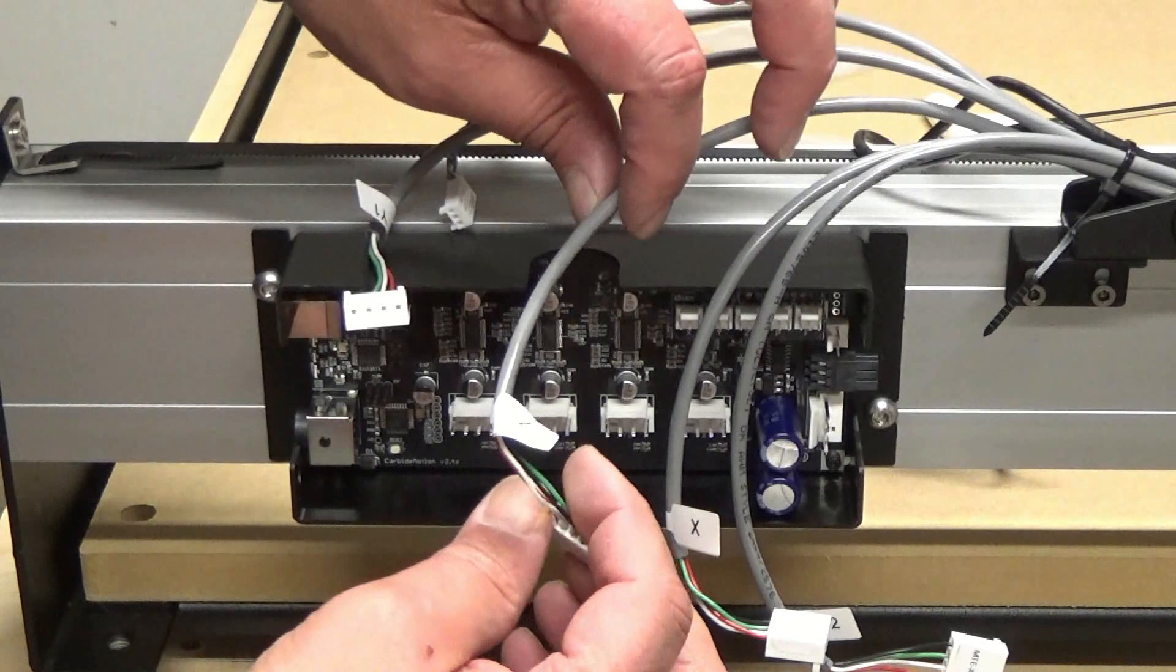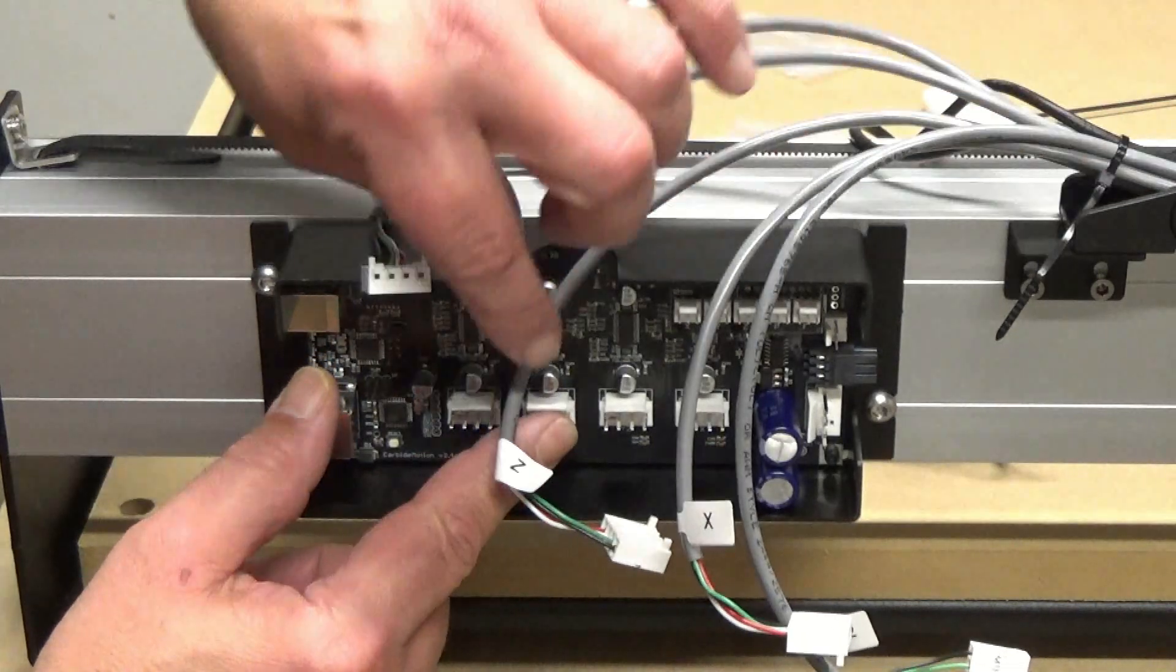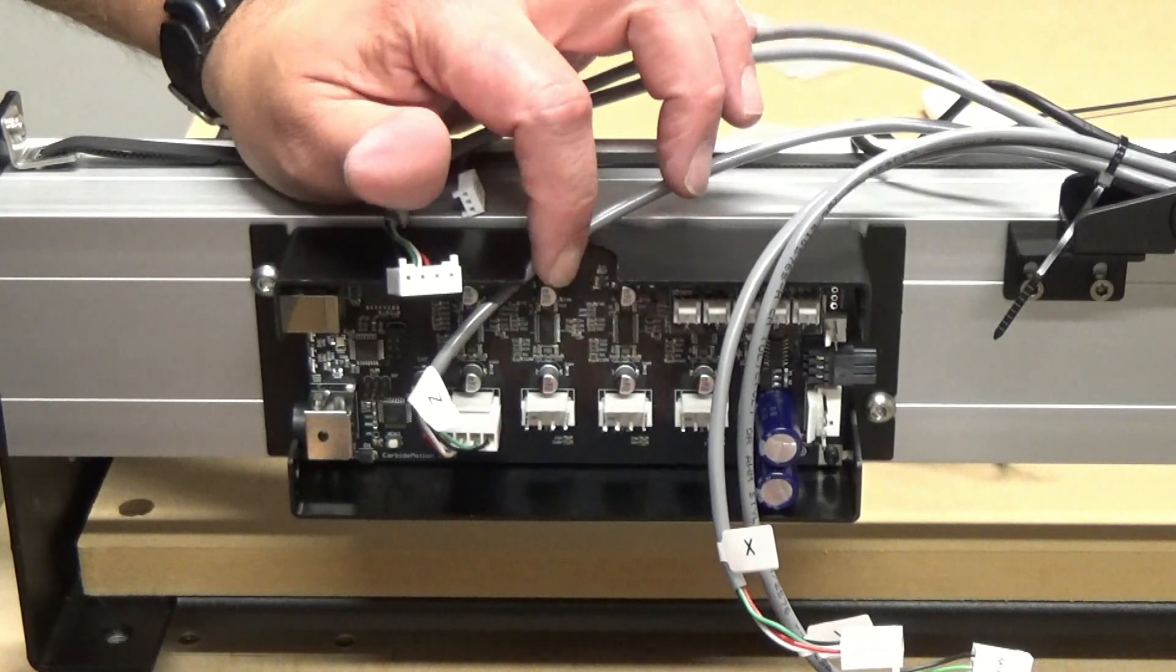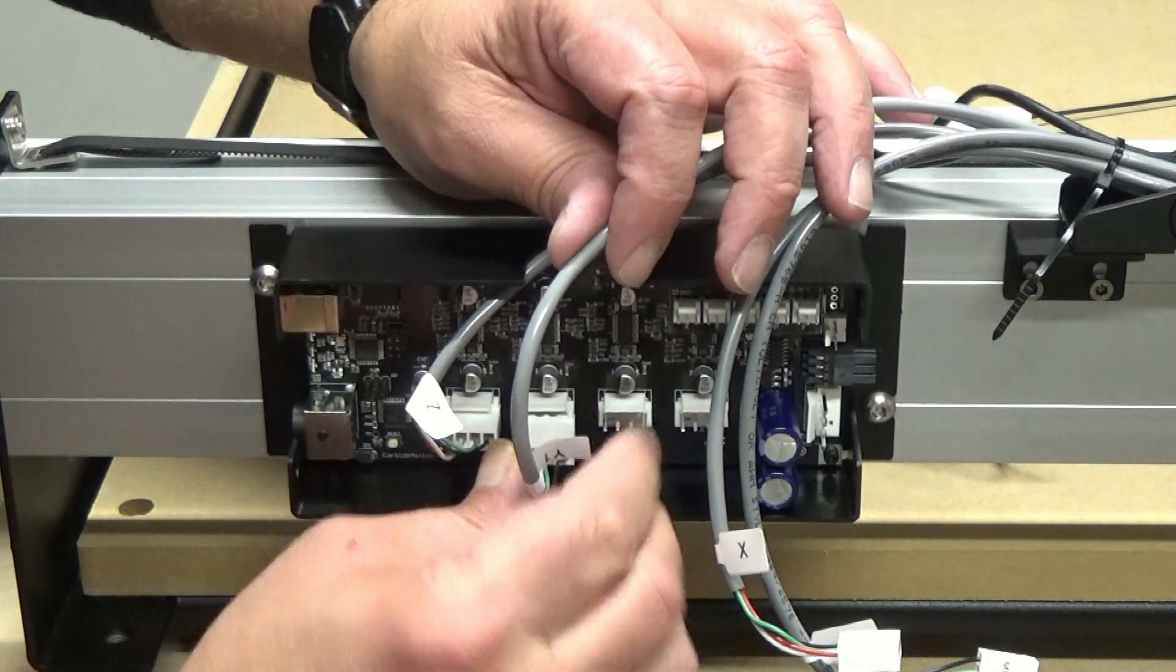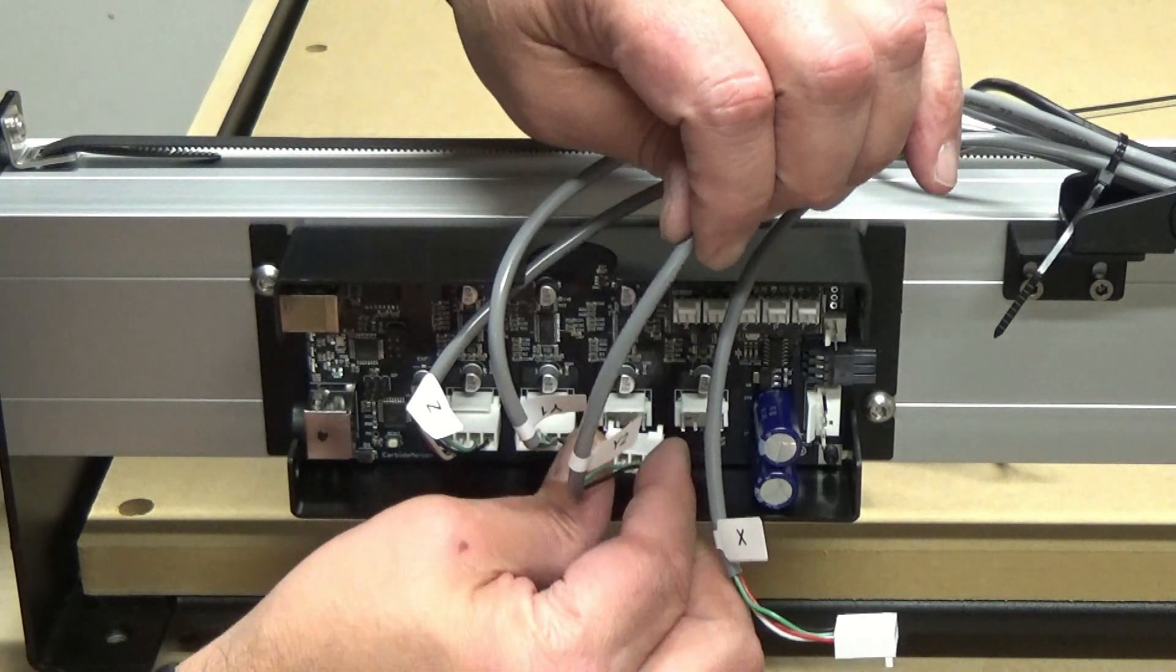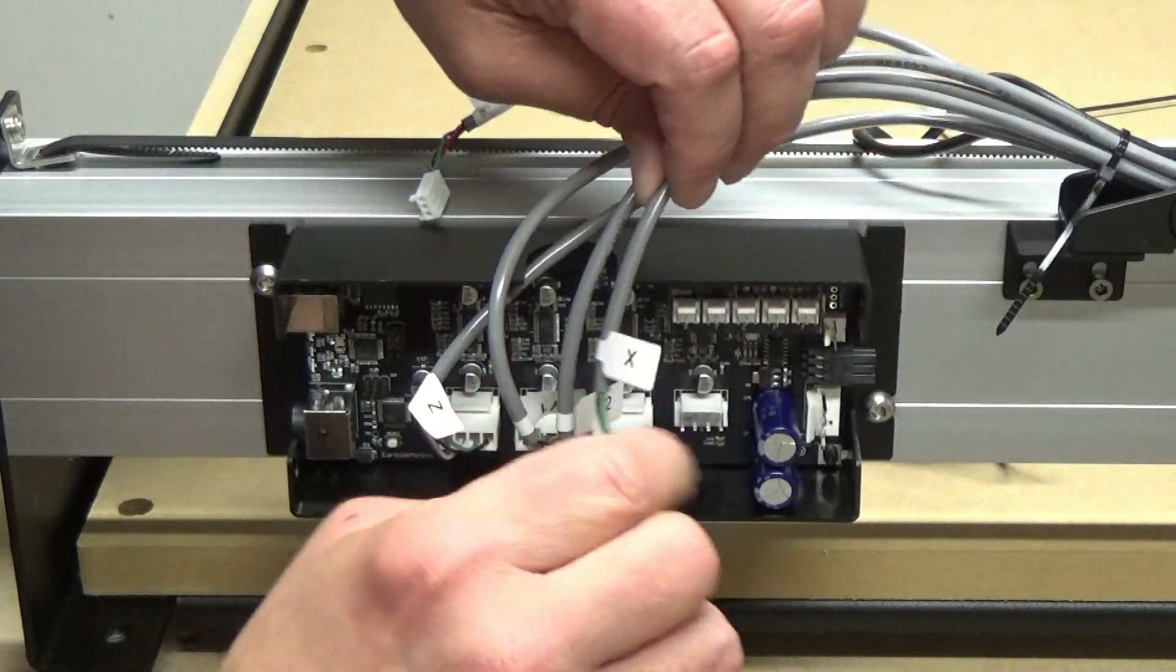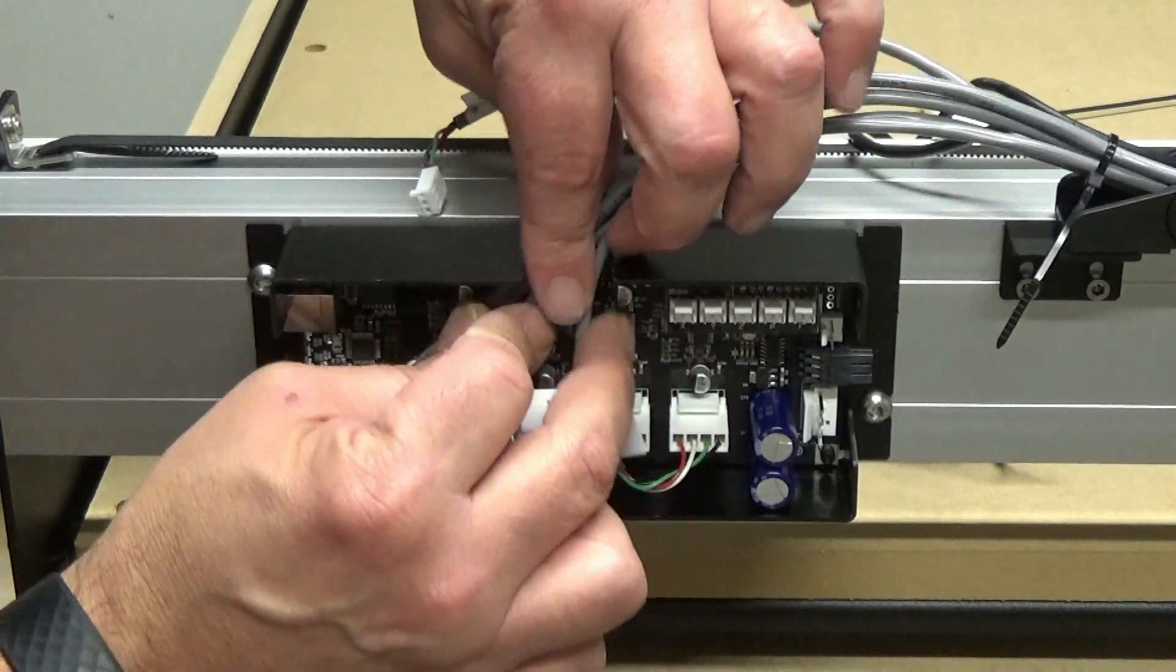Now everything is labeled to what goes where. So this is for our Z. This is going to be for Y1, which is this side. Y2, the other side. And then we also have the X axis. So I'm going to go ahead and plug in the Z first. And then we'll look for the Y1 right there. Y2. And then we have the X axis. Just like that. Alright.